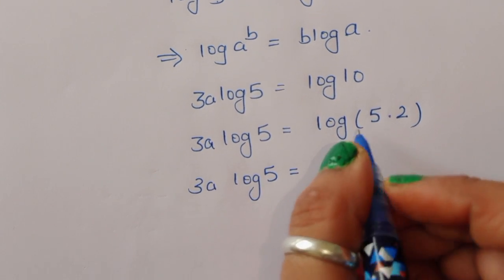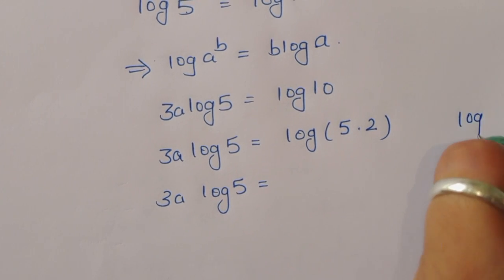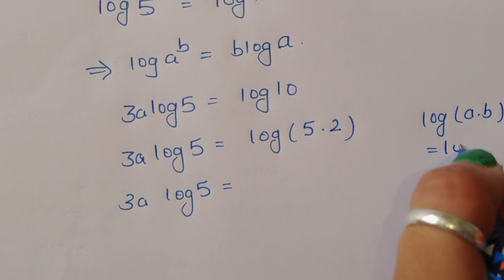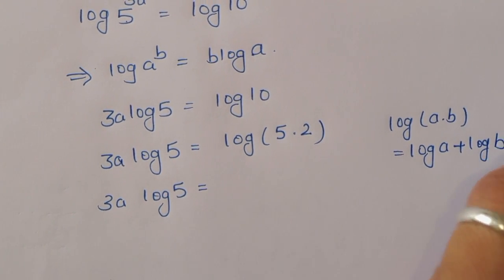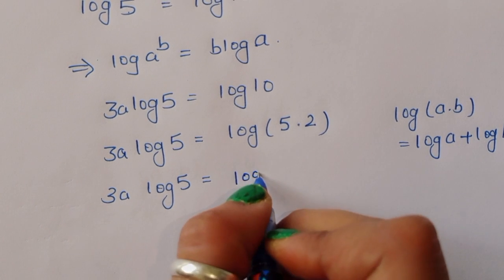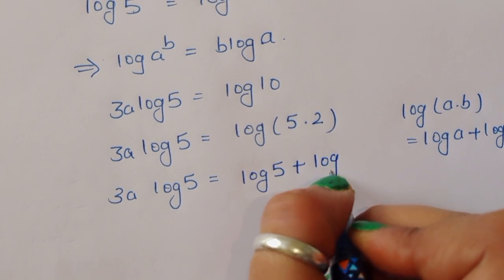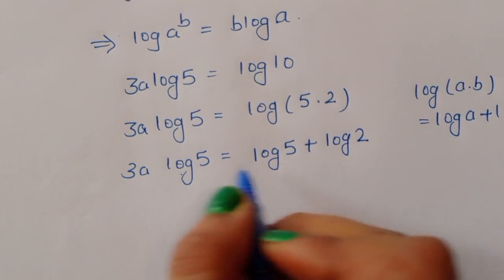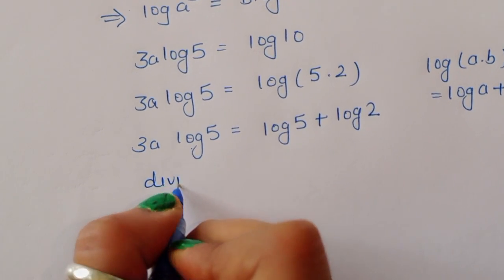We get 3a·log(5) is equal to log(10), that is log(5 × 2). We know the formula log(a × b) equals log(a) plus log(b). Using this formula, we expand log(10) to get log(5) plus log(2).